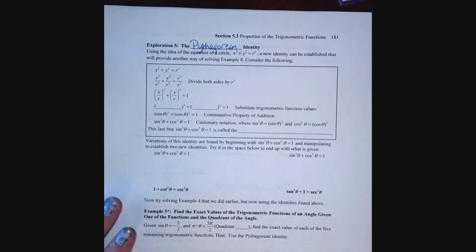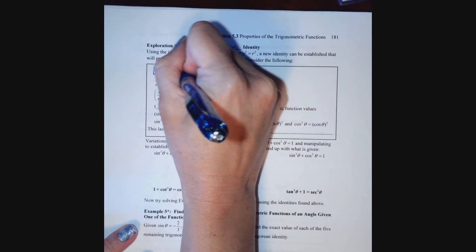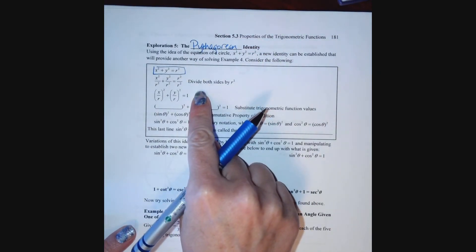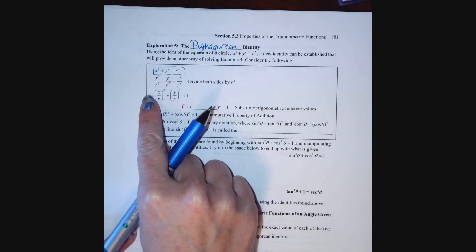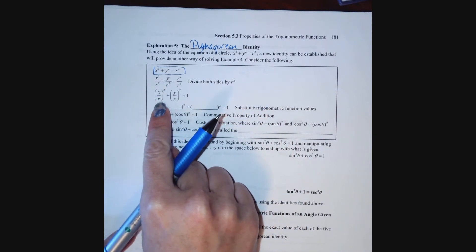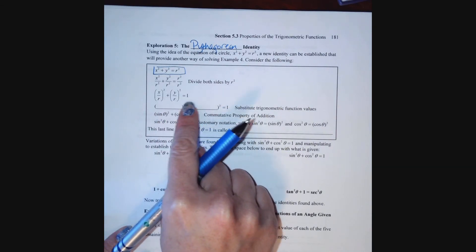The Pythagorean identity is based on the equation of a circle, which is x squared plus y squared equals r squared. We establish this identity through simple algebra by dividing everything by r squared, then factoring so that we have x over r quantity squared plus y over r quantity squared equals 1.